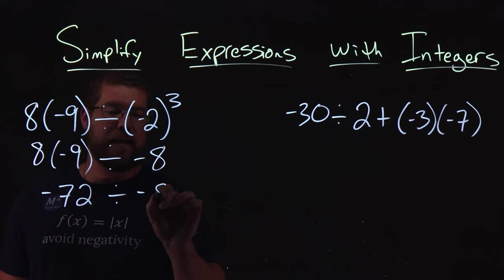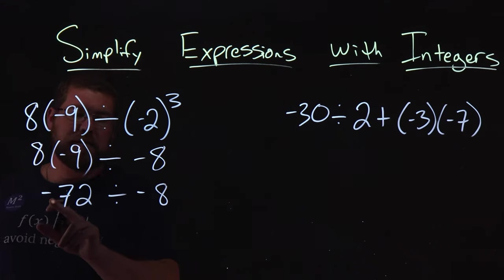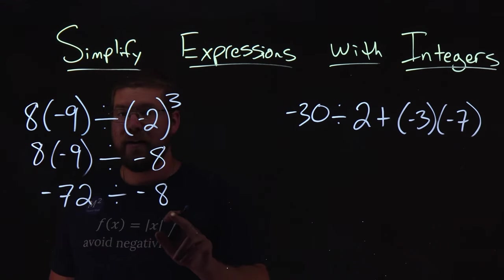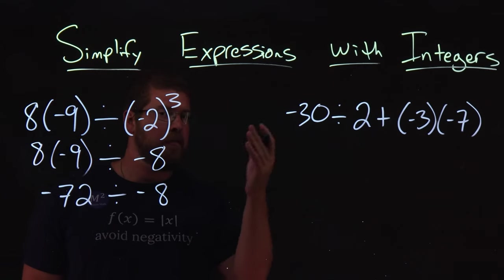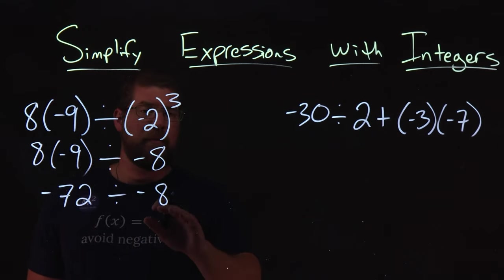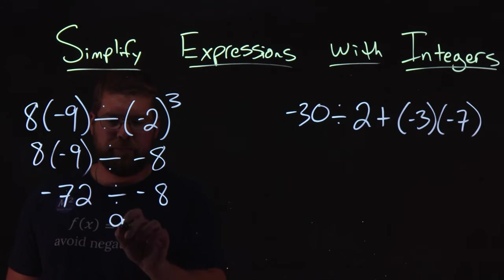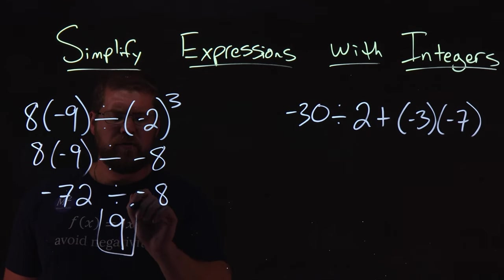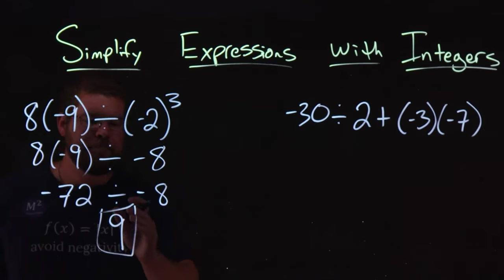Then we have division, negative eight. Negative 72 divided by a negative eight is going to be a positive number. Negative divided by a negative is a positive, and 72 divided by eight is a nine. Not too shabby. So simplifying our first expression here is just a nine.